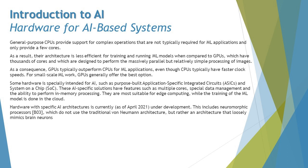General purpose CPUs support complex operations but only provide a few cores — quad-core, dual-core, hexa-core, or octa-core — which is sufficient for laptops and PCs. However, for AI-based systems we need more cores. As a result, CPU architecture is less efficient for training and running ML models compared to GPUs. For basic narrow AI implementations on smartphones, a simple CPU may do the job.